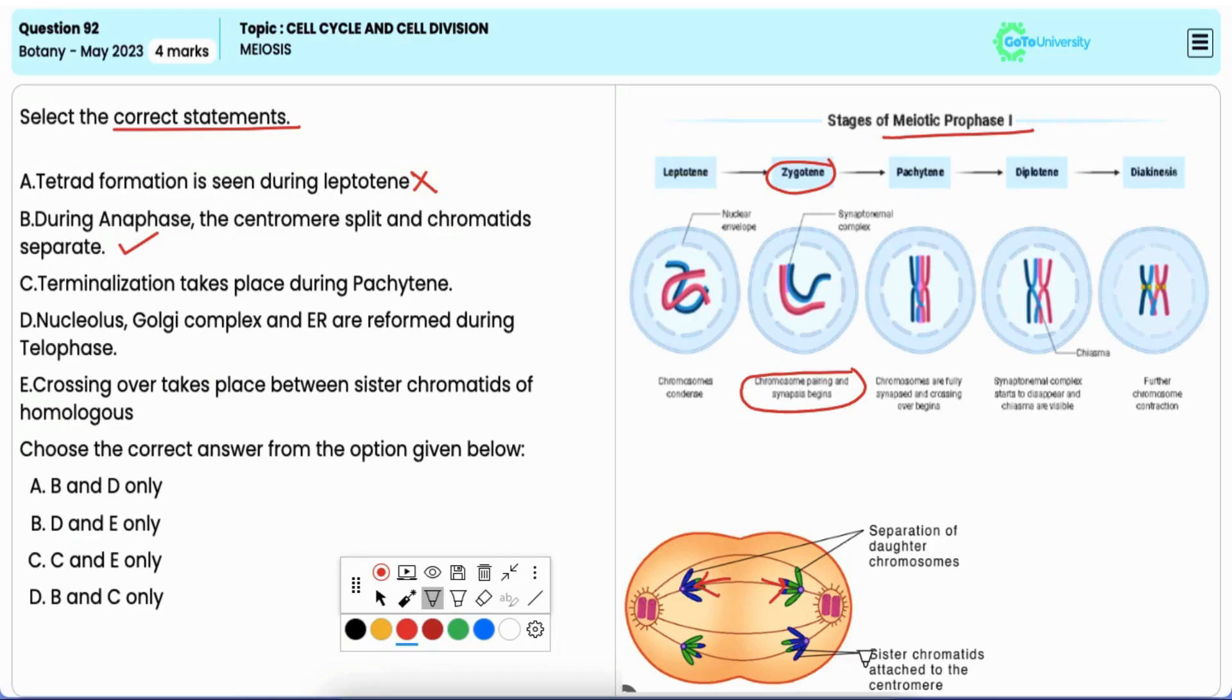Statement C: terminalization takes place during pachytene. It is incorrect. Terminalization refers to the disintegration of chiasmata which occurs during diakinesis, the last stage of prophase one, not during pachytene.